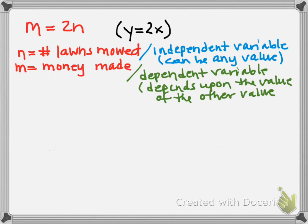So when n is 2, what's m in that situation? If n is 2, we end up with 4 for m. But if n is 5, what do I get for m? I get 10. So that value of m depends upon what the value of n was. That's what we mean by dependent variable.